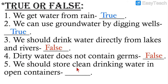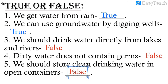Number five: We should store clean drinking water in open containers — false. We should not store water in open containers; if we do, the water becomes dirty and we cannot drink it. So we should store clean drinking water in closed containers. Those were the five True or False of chapter 11.